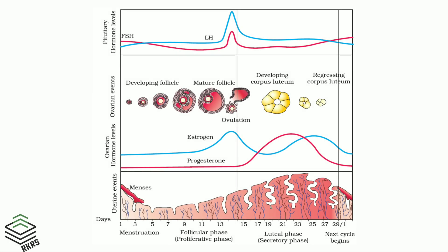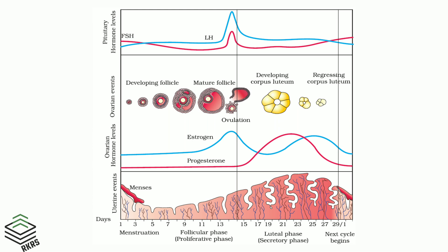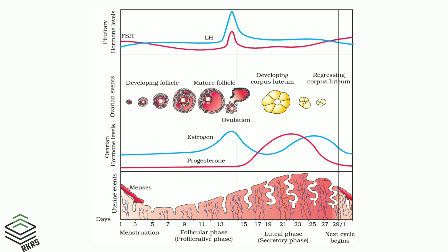The graph shown here summarizes different aspects of the human menstrual cycle, and is particularly important in the examination. The X axis shows the duration of the menstrual cycle and its different phases. The Y axis shows different aspects of the menstrual cycle, including uterine events, levels of ovarian hormones such as estrogen and progesterone, ovarian events, and the levels of pituitary gonadotropic hormones.